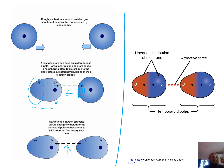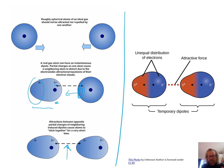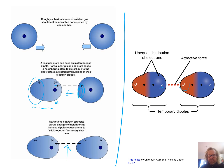This occurs throughout the whole substance, creating all these different little temporary dipoles, which are changing all the time, but are there long enough to hold the molecules and atoms close enough. Applying this to molecules: if there's an uneven distribution, it will induce the neighboring molecule. A slight negative charge can repel electrons to one side, creating a slight positive charge and an attraction force. That's how temporary dipoles are made within a substance - just by chance and by inducing them in neighboring molecules.